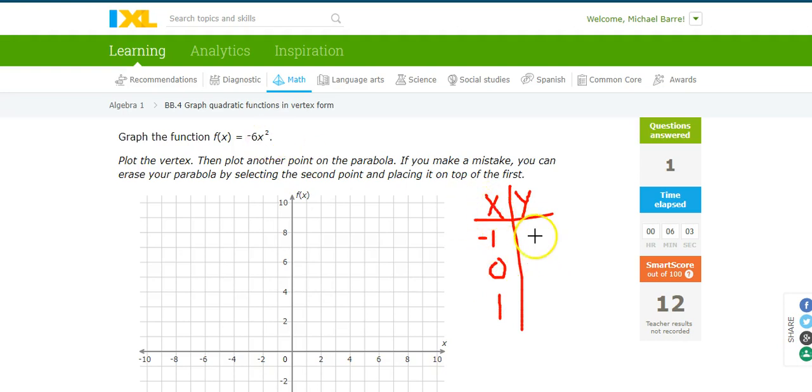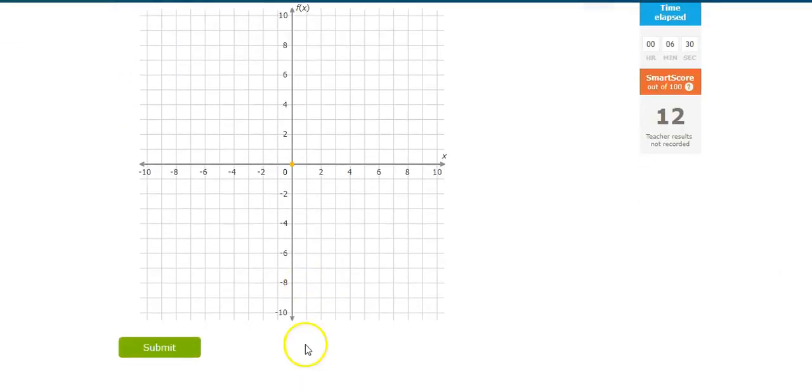If I plug in a negative 1, I get out a negative 6. If I plug in a 0, I get out a 0. If I plug in a 1, I get out a negative 6. So over here, I'm going to plug 0, 0, because that's the vertex, and 1, negative 6. 0, 0, 1, negative 6. There's my graph.